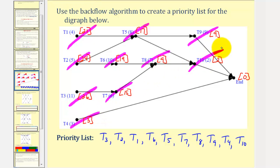This is how we create a priority list using the backflow algorithm. I hope you found this helpful. Thank you.